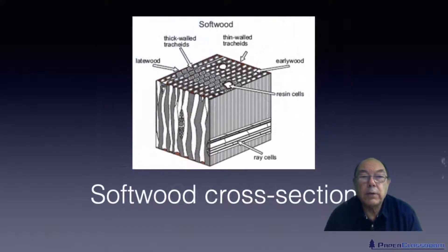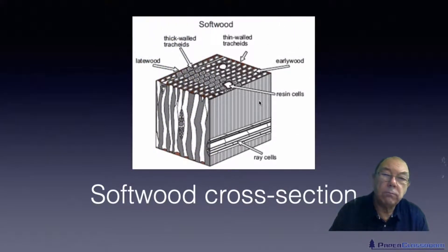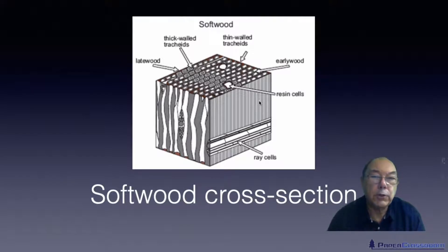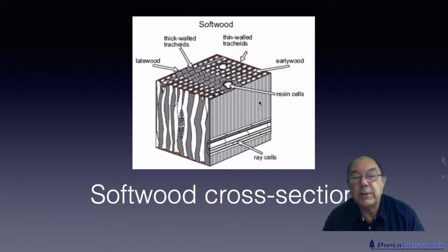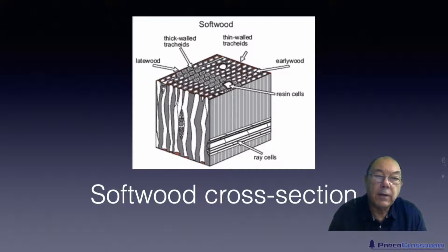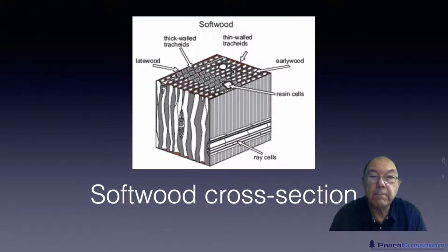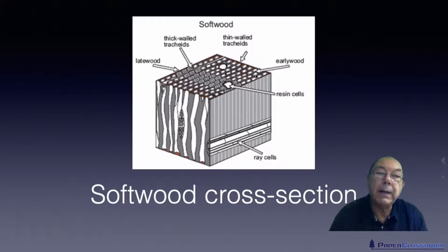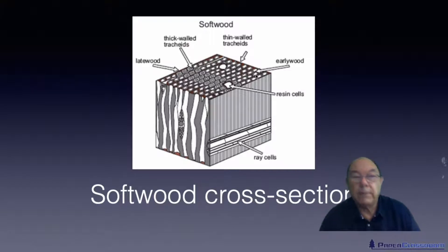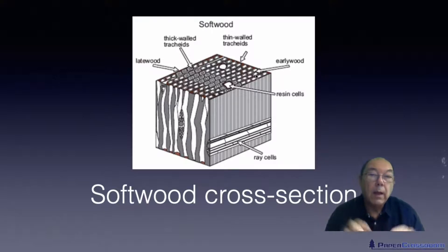This is a section of a softwood tree. Although we always call them fibers, biologists would correct us and say they're not fibers — they're really called tracheids, but fibers is good enough for us. You can see two different types of fiber here. What we call late wood fibers have very thick walls and a very small lumen. What we call early wood fibers have very thin walls and a much bigger lumen, and there's a good reason for this.